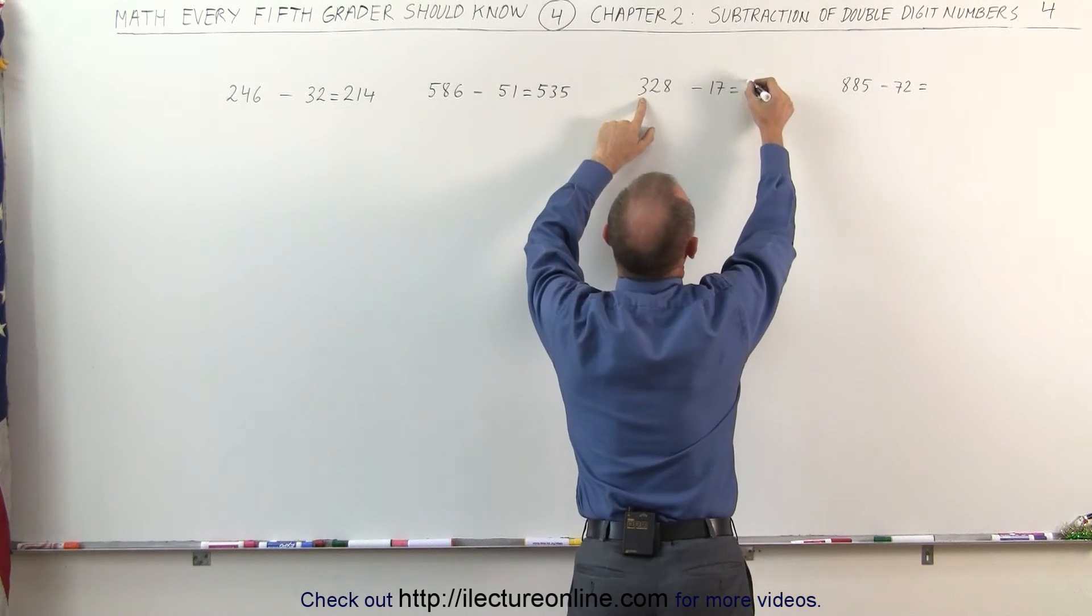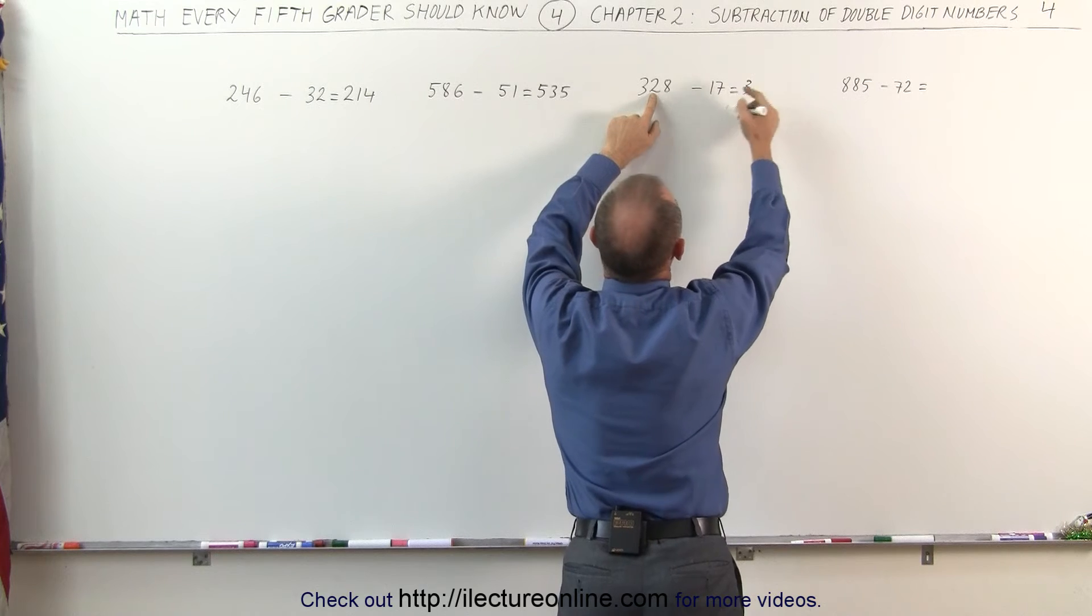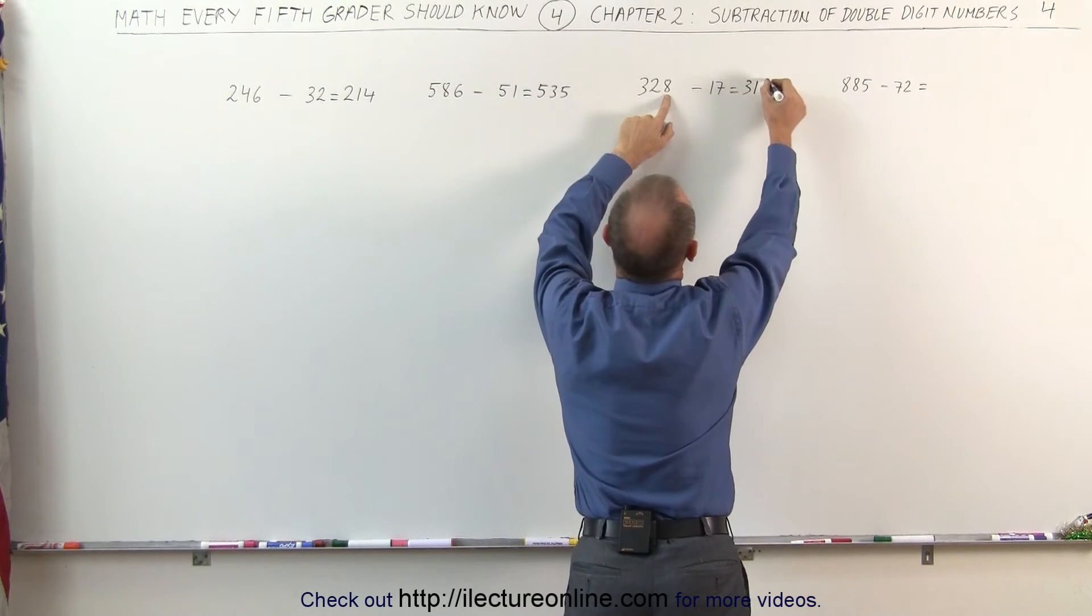Here, the 3 remains intact because 17 is smaller than 28. 2 minus 1 is 1, 8 minus 7 is 1.